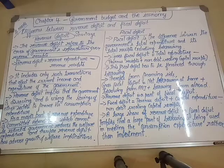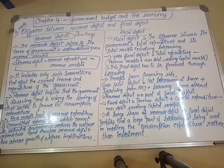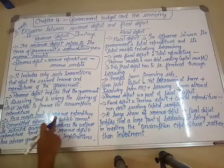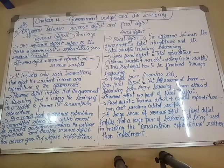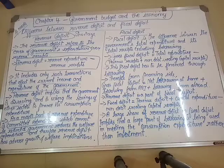We cannot reduce this portion of committed expenditure. So if we want to reduce the revenue deficit, we cannot cut down the committed expenditure portion. Therefore, the government tries to reduce its welfare expenditure — like roads or bridge construction — to cut down overall expenditure.